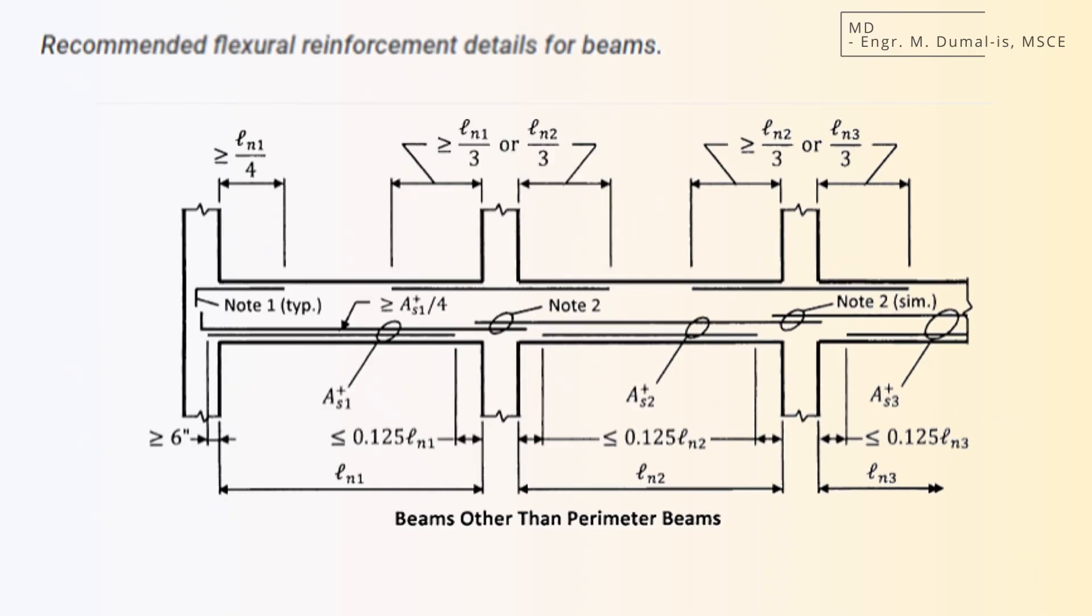This diagram shows how we arrange and splice top reinforcement in interior beams, beams that are not along the perimeter of the structure. First, notice that the top bars are spliced, but not directly over the supports. The code tells us to move the splice away from high moment zones, usually into the middle third of the span, where stresses are lower. At each splice, at least 1 fourth of the original bar area As over 4 should be continued through. This helps ensure that the bars are still properly anchored.